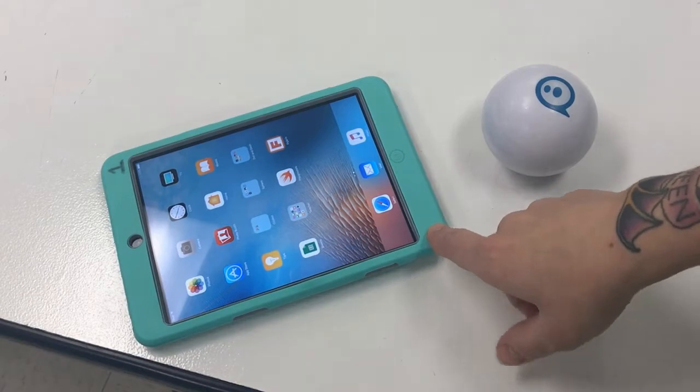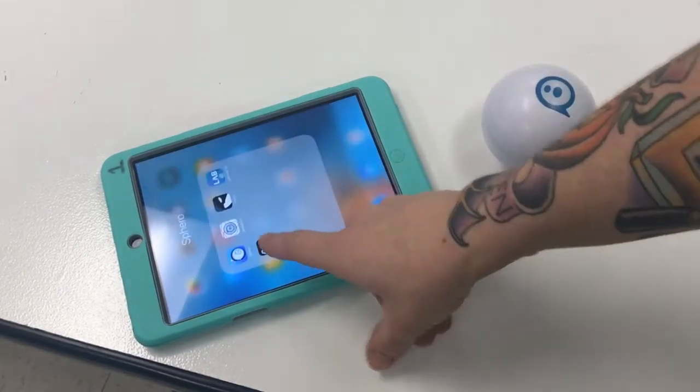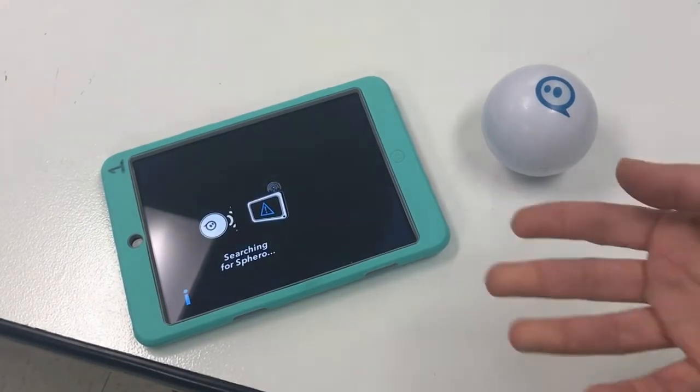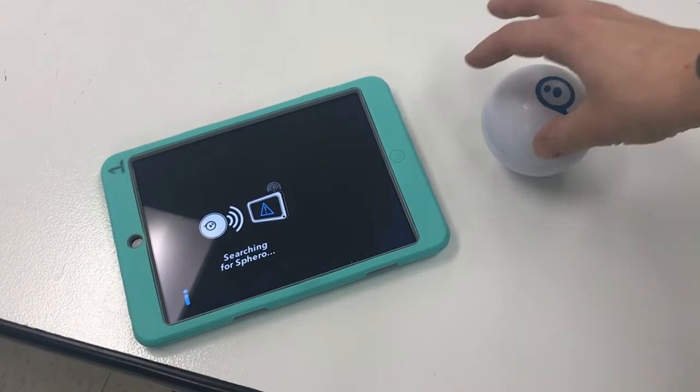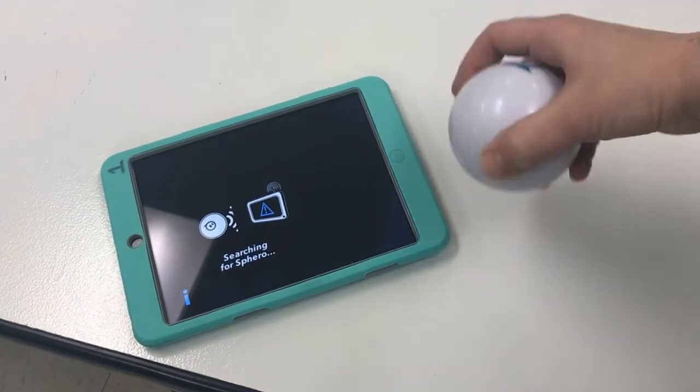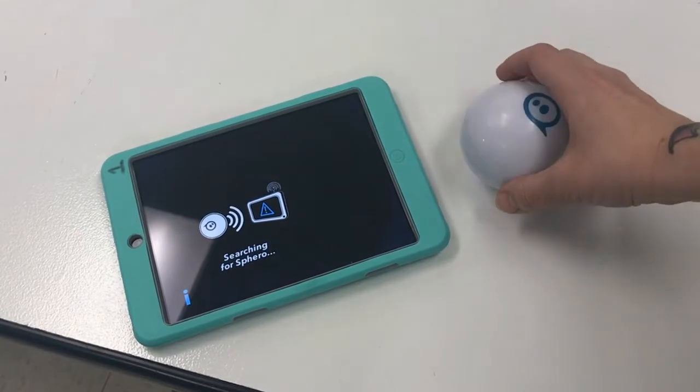Once you have your Sphero, you can open up the Sphero app and you may find that it starts to run and it's searching for a Sphero. Well, my Sphero has to be on before it can actually find it, and the way that you wake up a Sphero is you give it a little shake or a tap until it lights up.